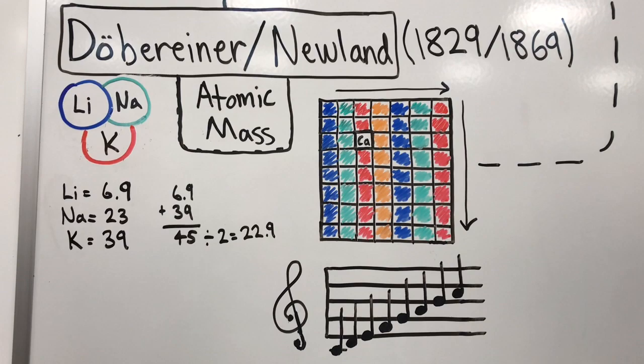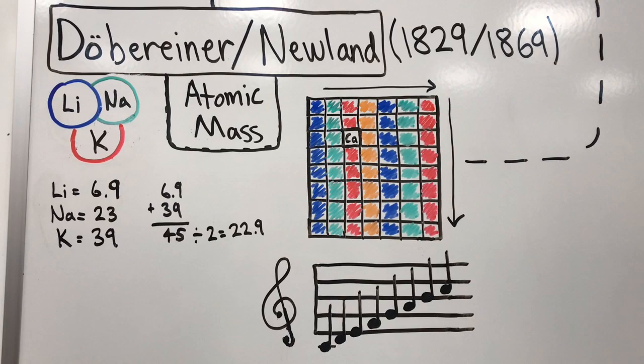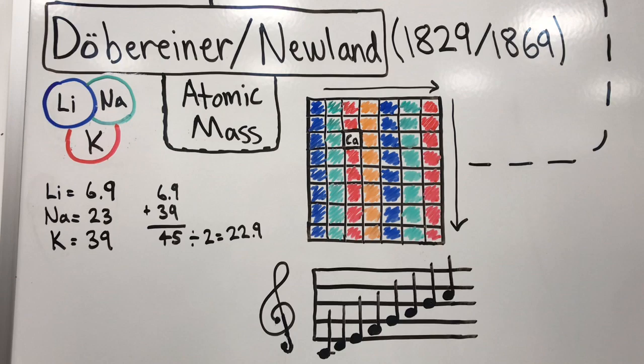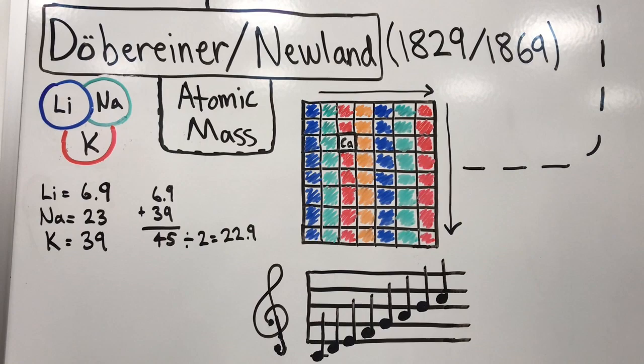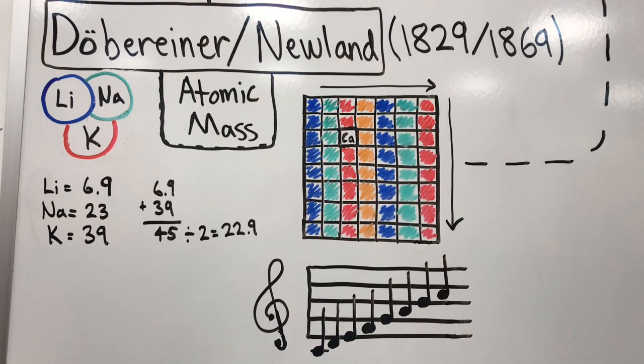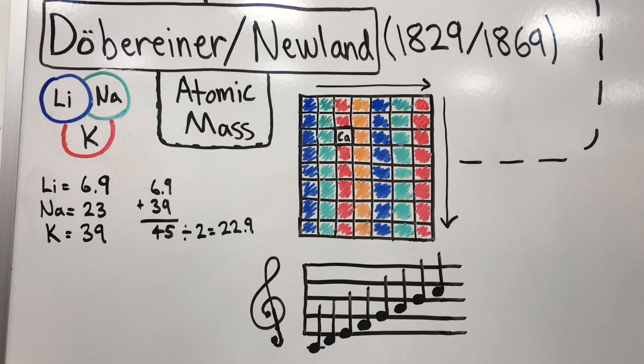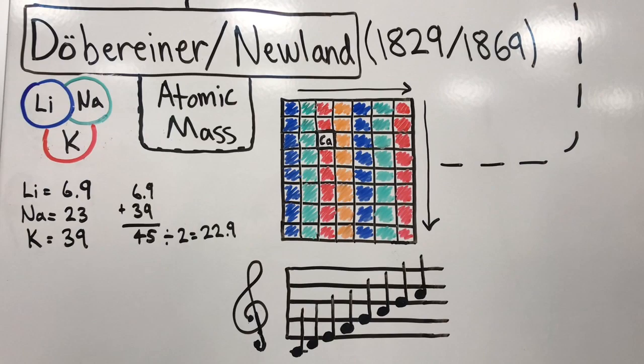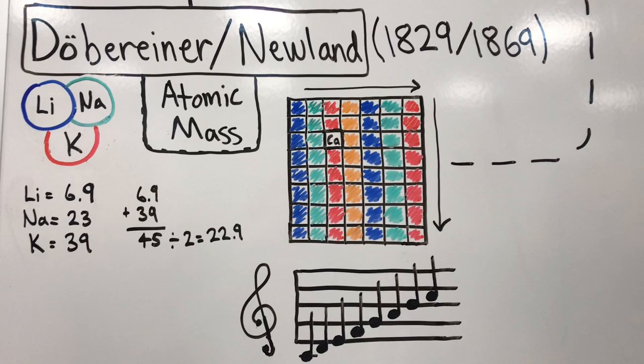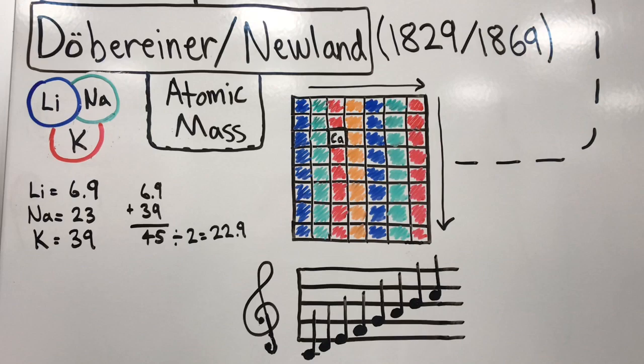Döbereiner was a German scientist and he came up with the idea of triads. He took elements by their atomic mass and found that if you take one element, add it to a heavier element and divide it by two, it came out to be the atomic mass of a third element in between them. Using this logic, Döbereiner ordered a few of the elements into triads into a table. These triads were finicky and didn't work very well with all of the elements discovered.